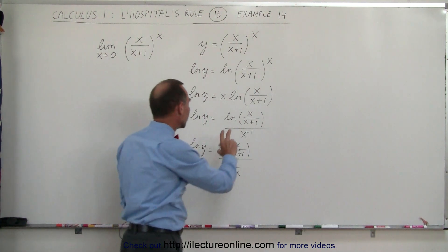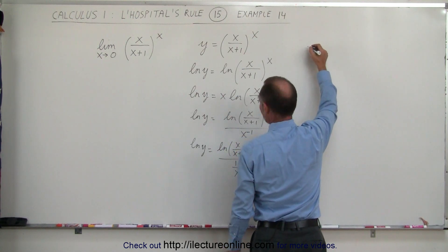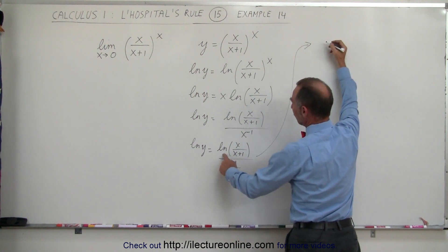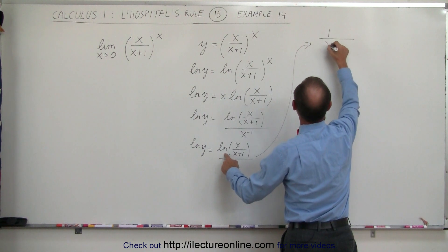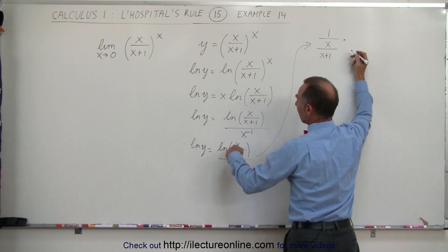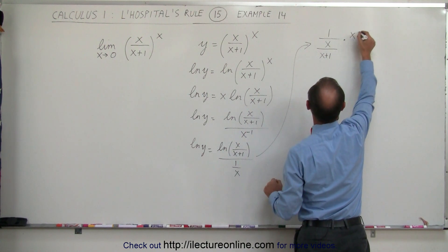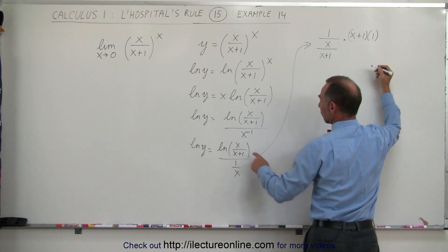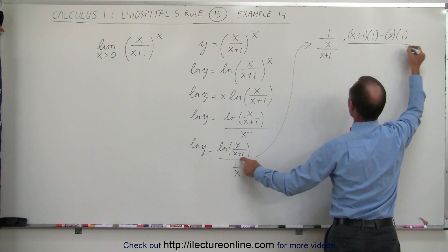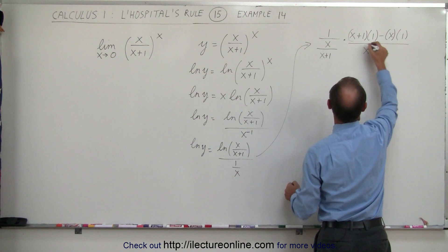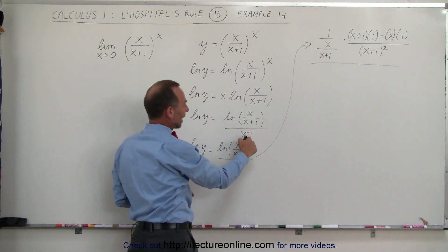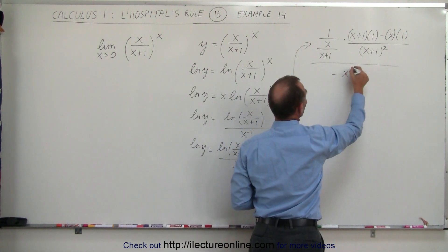We're going to take the derivative of the numerator and the denominator. The derivative of the numerator is 1 over x divided by x plus 1, times the derivative of that fraction — which is x plus 1 (the denominator) times the derivative of the numerator, minus the numerator times the derivative of the denominator, all divided by the denominator squared, (x plus 1) quantity squared. Then the derivative of the denominator, x to the minus 1, becomes minus x to the minus 2.